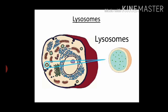Lysosomes break foreign materials into small pieces and allow them to exit the cell. They are able to do this because they contain powerful digestive enzymes capable of breaking down all organic material. These enzymes within the lysosomes break materials down into simpler components and release them. During disturbances in cellular metabolism — for example, when the cell gets damaged — lysosomes may burst and the enzymes digest their own cell.